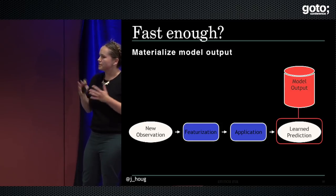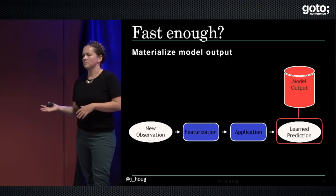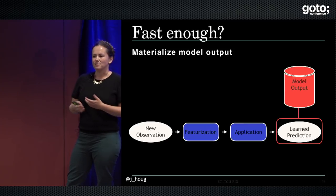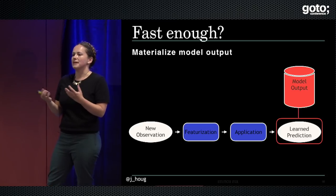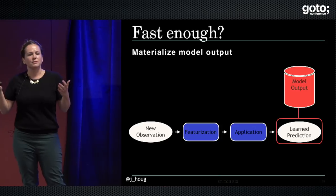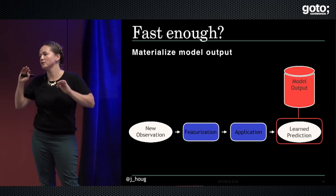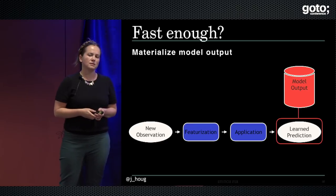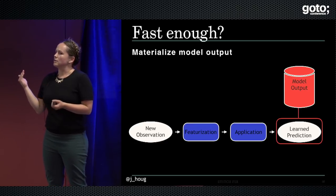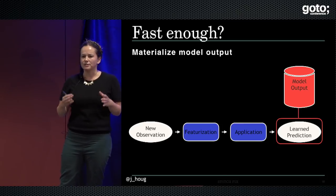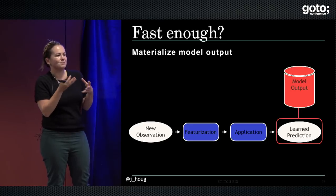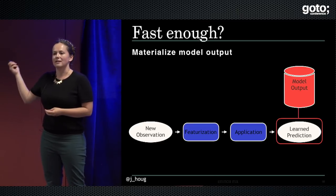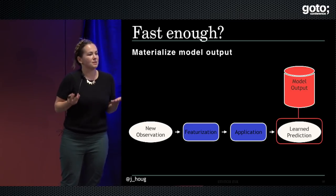Another way is to materialize model output ahead of time. Thinking back to the churn example: if you don't have huge numbers of customers and you want to predict churn based on features that aren't changing very quickly, every night you could just run a job that outputs the predictions to a file or database. Once you need the prediction, you look it up. This is extremely fast. The challenge is it only really works with problems that have bounded domains and are not extremely responsive to new inputs — if what you need is that person and what time of day it is right now to get to your prediction, this is not a trick that will function adequately.